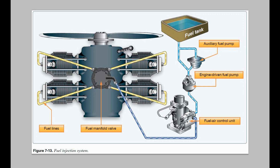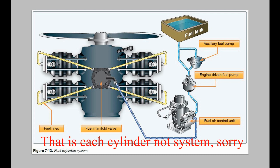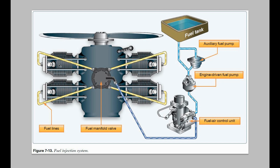Let's look at how a piston engine works. I'll discuss the carbureted engine, though this works the same for a fuel-injected engine. This picture is from Chapter 7 of the Pilot's Handbook of Aeronautical Knowledge and shows a fuel injection system with a four-cylinder engine — cylinders one, two, three, four — with fuel going to each cylinder. If it were a carburetor, there would be a manifold system instead. Each cylinder fires separately in a firing order such as 1-3-2-4.